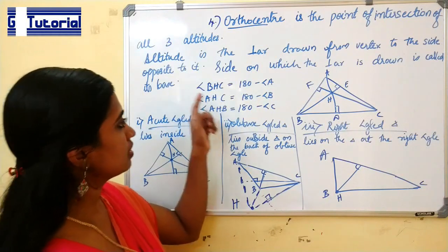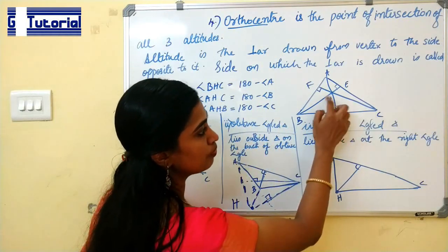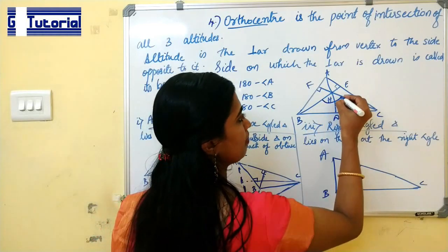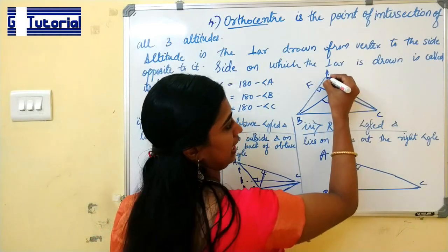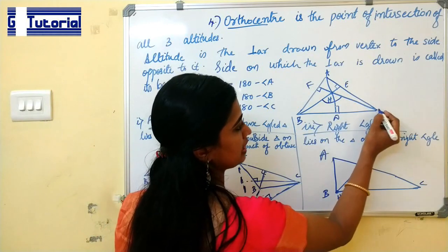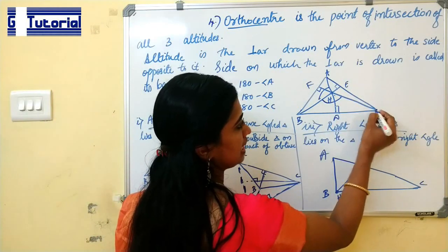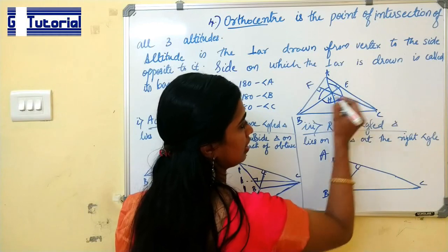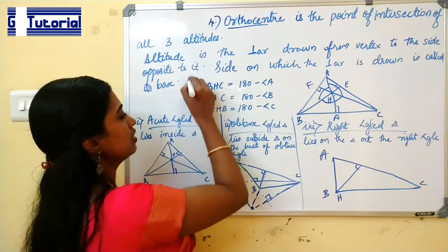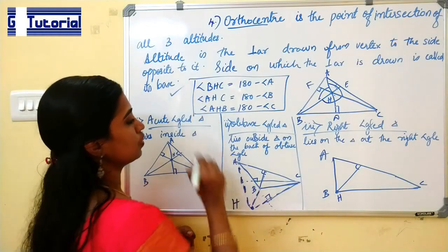The orthocenter is denoted by the letter H. The angle BHC is equal to 180 degrees minus angle A. Similarly, angle AHB is equal to 180 degrees minus angle C. And angle AHC is equal to 180 degrees minus angle B.